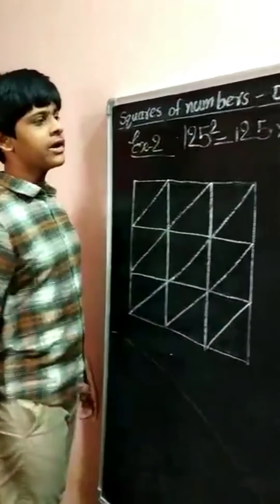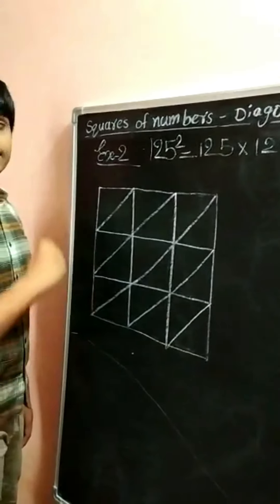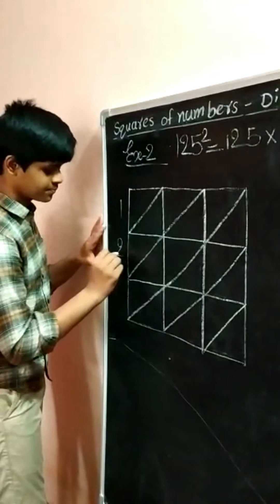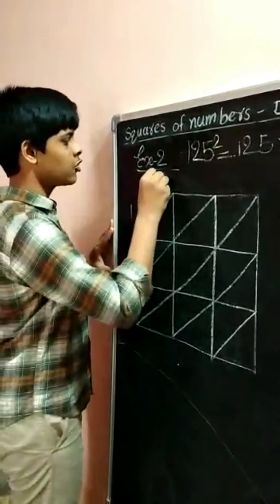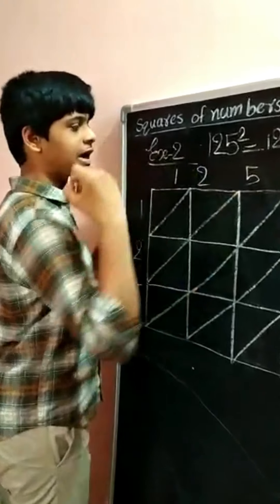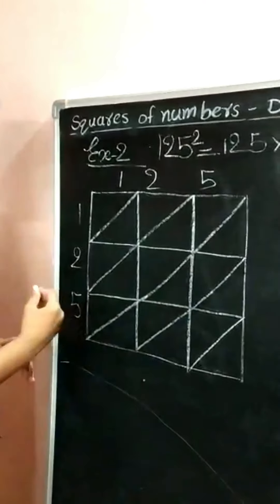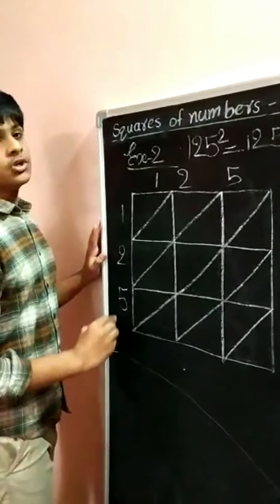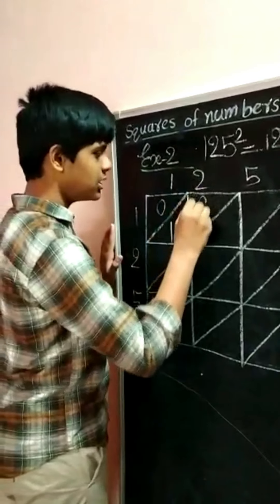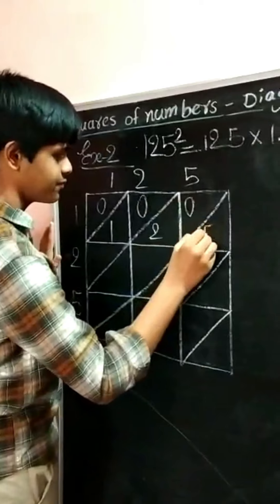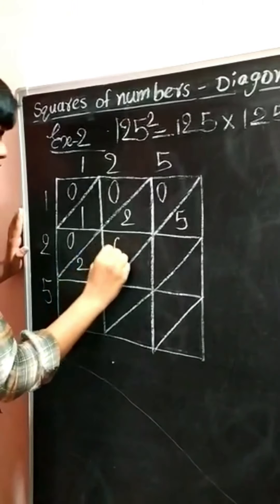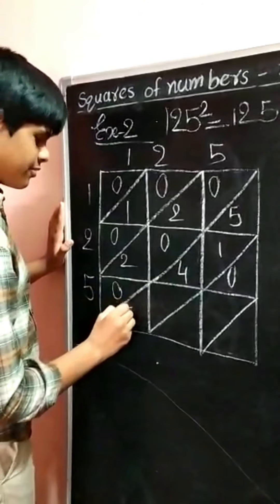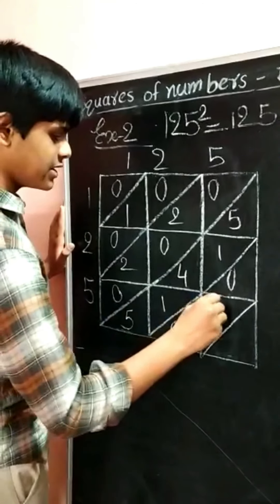The first number 125 is called the multiplicand and the second number 125 is called the multiplier. Write the multiplicand column-wise and multiplier row-wise. Find the product row-wise and fill each and every row diagonal-wise. 1×1=1; single digit, so keep 01. 1×2=2. 1×5=5. 2×1=2. 2×2=4. 2×5=10. 5×1=5. 5×2=10. 5×5=25.